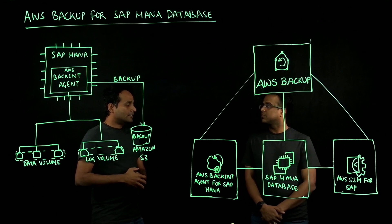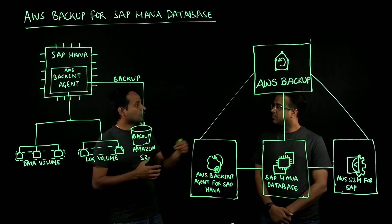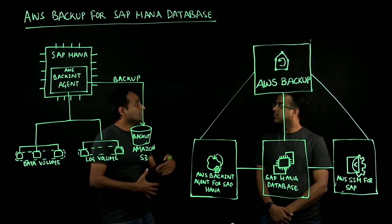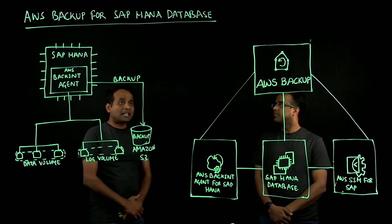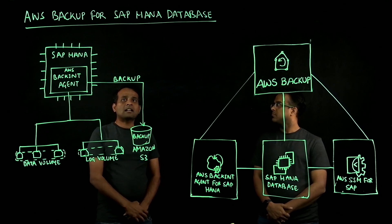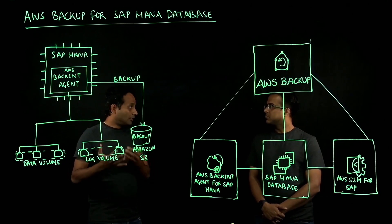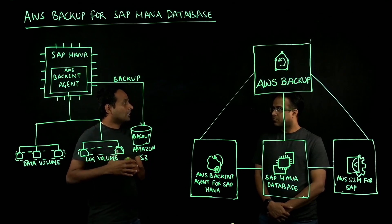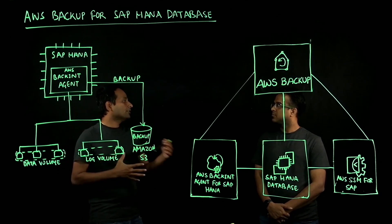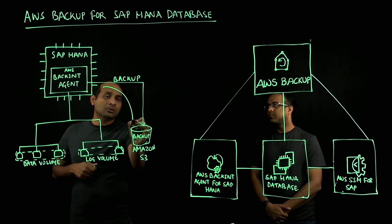Before we had this, customers were taking backups locally onto their EBS volumes and then manually transferring them onto Amazon S3. The challenge there was that it is a two-step process — they first had to do it locally and then transfer to Amazon S3. We solved that problem with the AWS Backup Agent for SAP HANA database. AWS Backup Agent for SAP HANA is a SAP-certified backup and restore application that runs on your EC2 instance where your SAP HANA database is running, and it will directly back up your SAP HANA database into an Amazon S3 bucket, eliminating the need for that two-step approach.